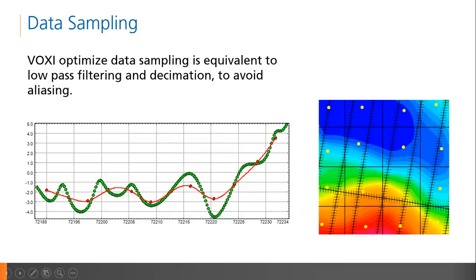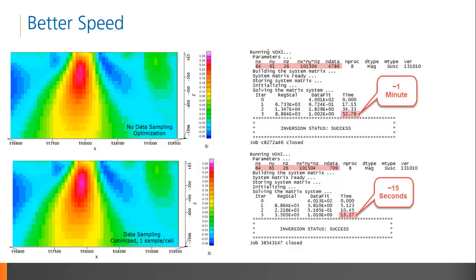Since this routine is dependent on cell size, it is crucial that when selecting the cell size, you take into account the frequency content of your data, which in turn is dependent on the source sensor separation. This graph demonstrates the result of optimizing your data sampling using the VOXI routine. The green points are the observations directly from the input database, and the red points are the representative observations after data sampling optimization to one sample per cell. A small, illustrative example is a magnetic inversion I ran using data acquired over the Ring of Fire in Ontario, Canada. This 64 by 61 cell inversion without optimized data sampling converged to a solution after three iterations in approximately one minute. The number of data points used in the inversion was approximately 4800.